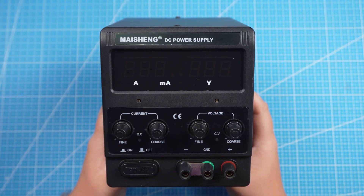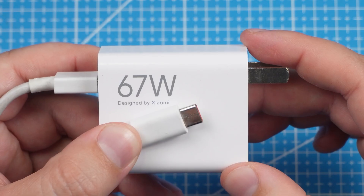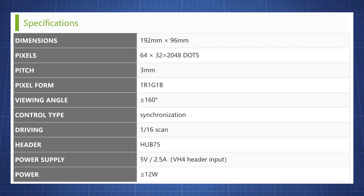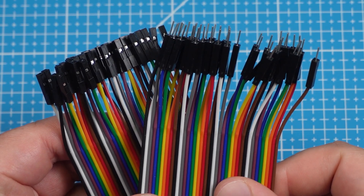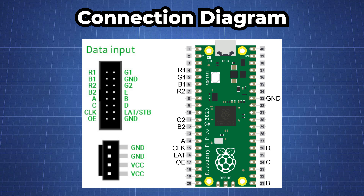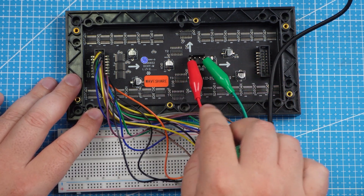Besides the Raspberry Pi Pico and LED panel there are a few other components that we will need. We need a power supply to power the LED panel. You can also use a cell phone charger as long as the supply provided can go up to 12 watts and is 5 volt. We need male to female jumper cables to make all the connections from the panel to the breadboard. Here is the connection diagram — make all the connections shown here from the Raspberry Pi Pico to the RGB panel.